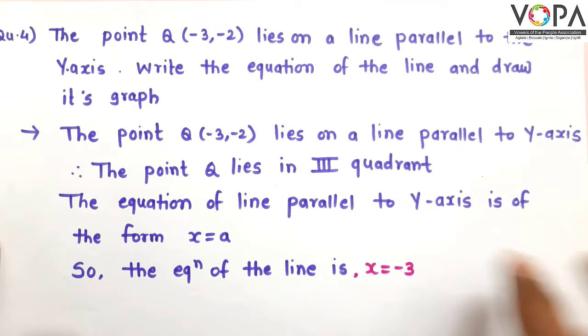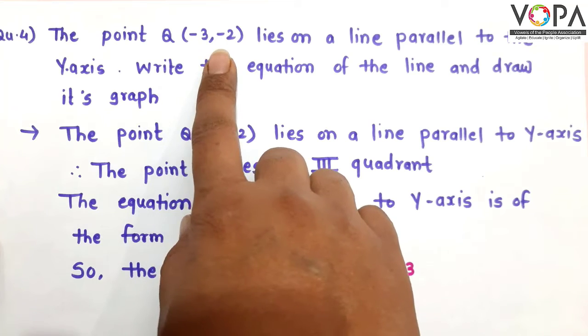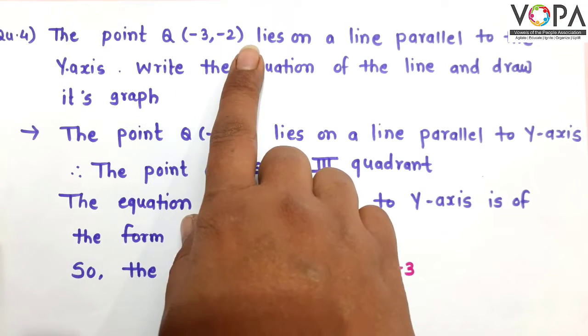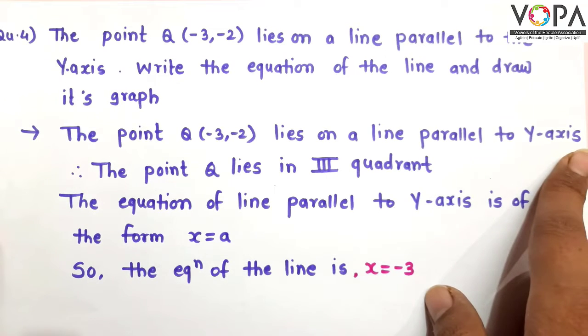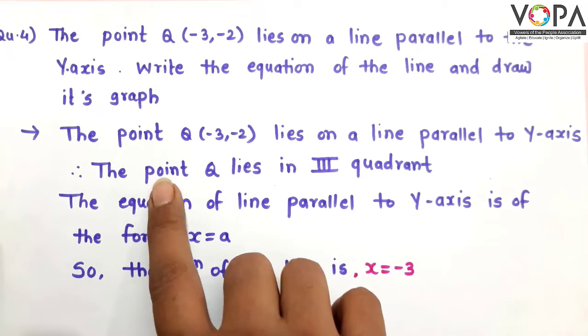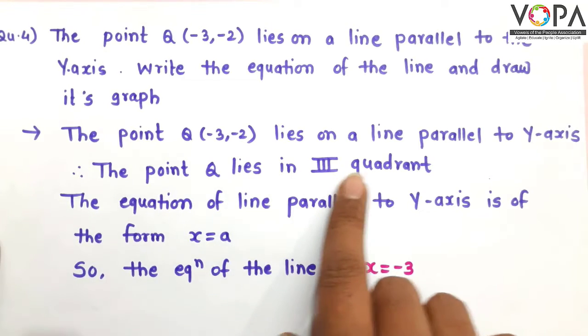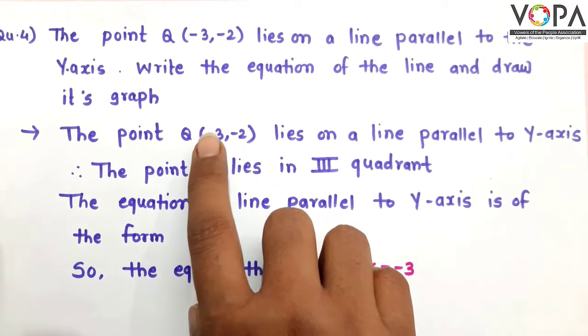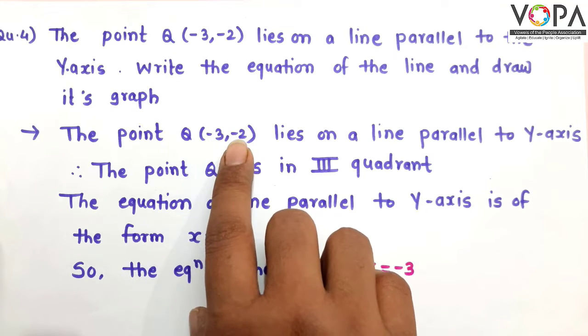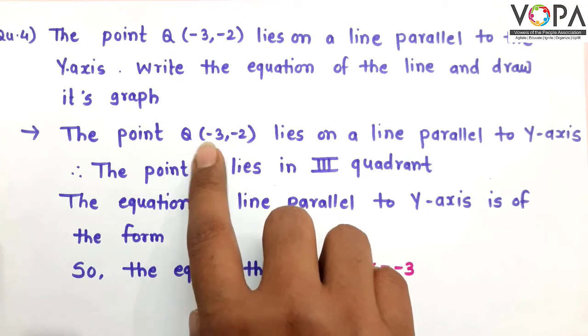Student, the point Q(-3,-2) lies on a line parallel to y-axis. Therefore, the point Q lies in third quadrant, because here both x-coordinate and y-coordinate of point Q are negative.